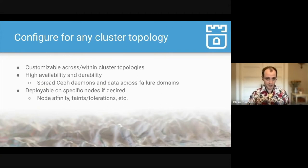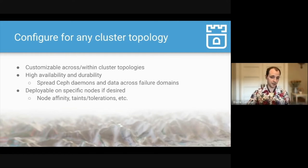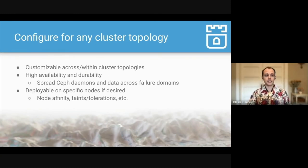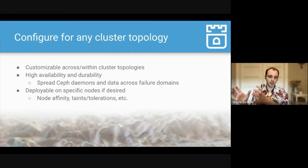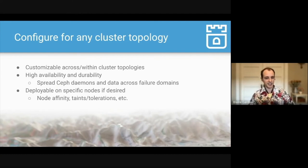Expanding on environments, it's possible to configure Rook for any cluster topology. This is customizable across failure domains or within failure domains, toward the end of providing highly available and durable storage — achieved by spreading Ceph daemons and data across failure domains as much as possible. A lot of users also want to keep application pods separate from storage pods, having a subset of nodes for storage and a subset for applications. That's possible using node affinities and taints and tolerations.